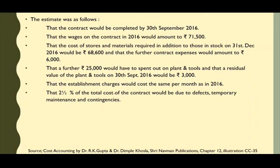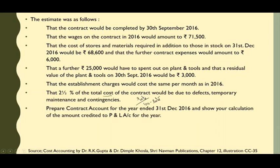2.5% of the total cost of the contract would be due to defects, temporary maintenance and contingencies. Ab dekho yahan par kahi nahi likha 'excluding the rate'. Nahi likhha — iska matlab kya hua ki 2.5% ko total cost pe nikalna hai, aur total cost pe nikalne ke liye hame kya lena padega: rate upon 100 minus rate. Prepare contract account for the year ended 31st December 2016 and show your calculation of the amount credited to profit and loss account for the year.